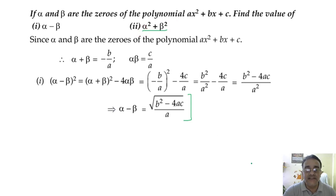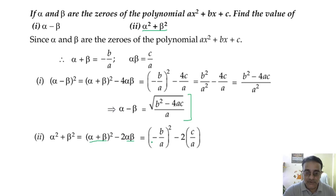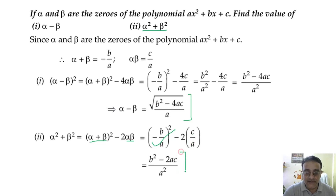For α² + β², using the formula (α + β)² − 2αβ: substituting −b/a for α + β and c/a for αβ, we get b²/a² − 2c/a. Taking LCM gives (b² − 2ac)/a² as the final answer.